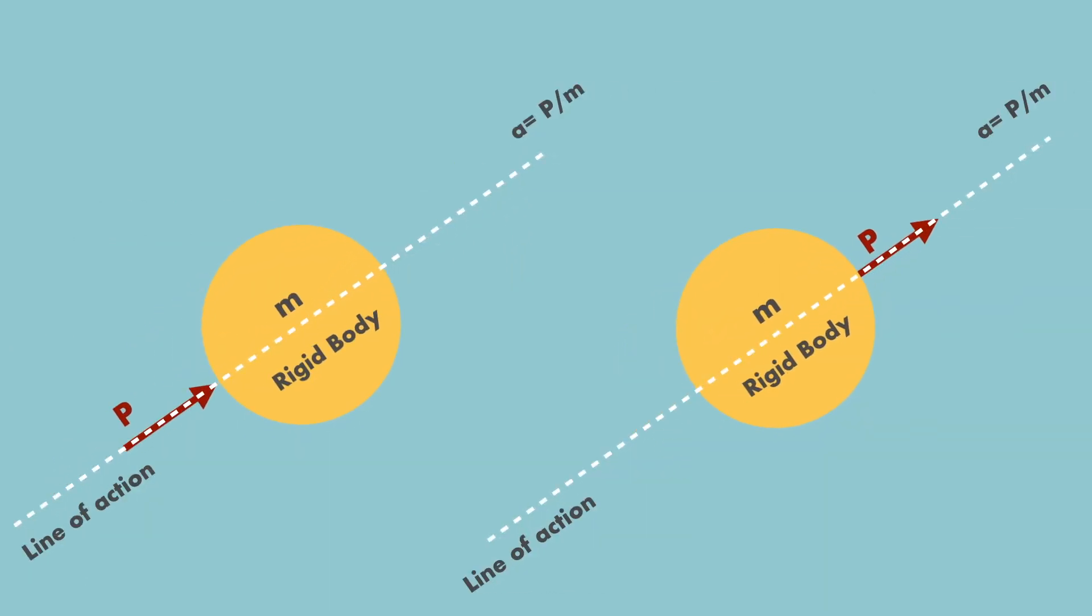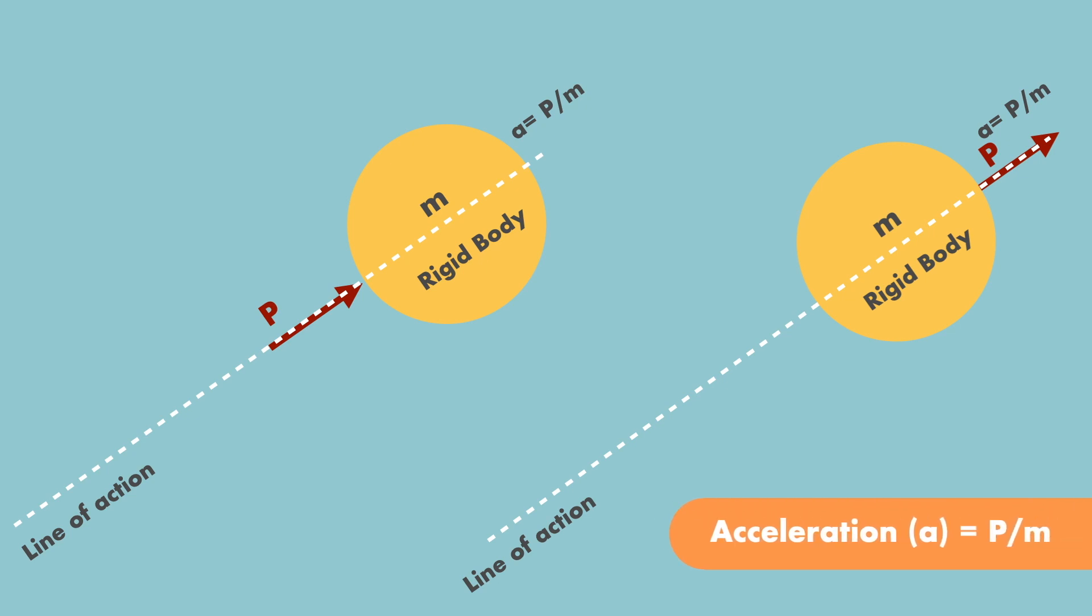Look here. In the first situation, a rigid body with mass M is pushed by a force P, while in the second situation, the same rigid body is pulled by the same force P in the same direction and line of action. Both cases have the same acceleration, which is equal to force P over mass M.